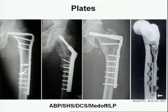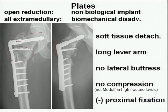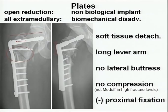For plates, you have angled blade plates, sliding hip screws, dynamic compression screws, MEDOF plates, and new locking plates. They have one advantage: you can do an open reduction. But this is also a disadvantage because you have to perform soft tissue detachment. All plates share a biomechanical problem — they are all extramedullary.